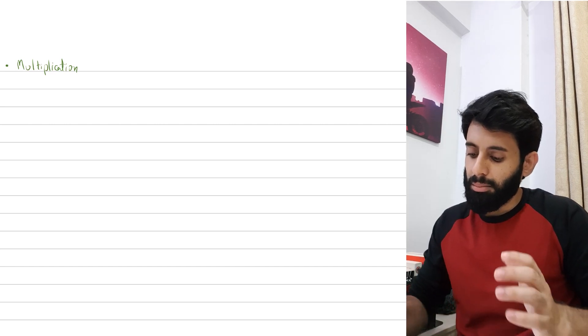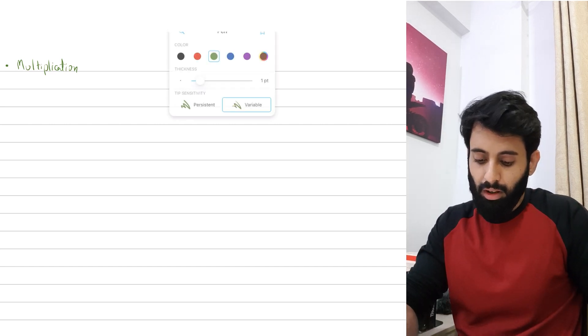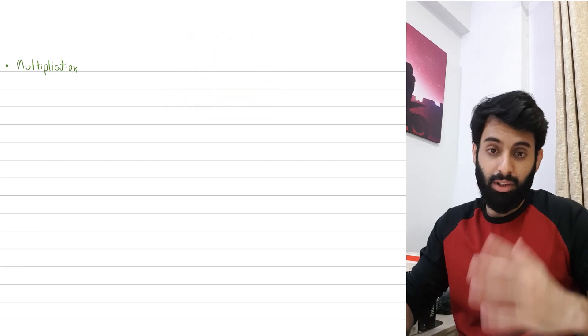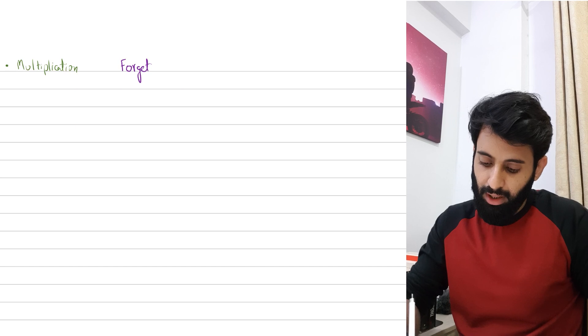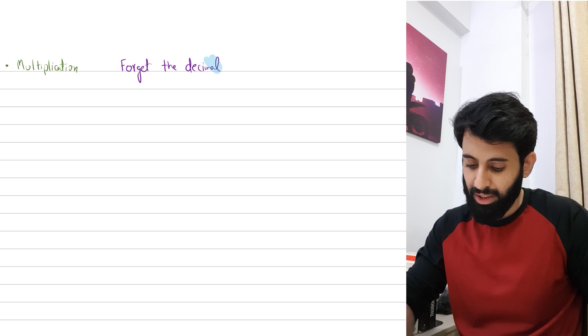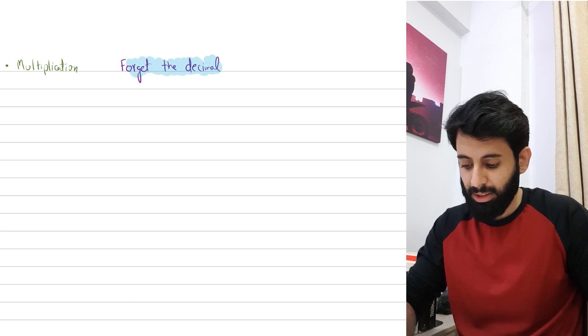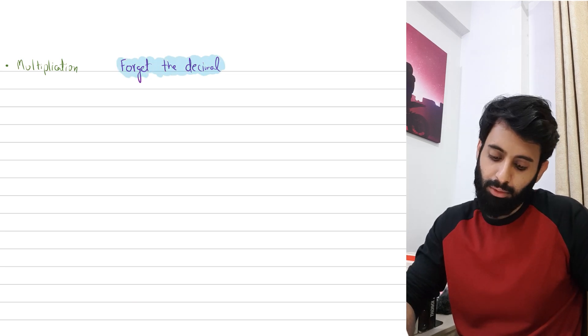But for multiplication of decimals you got to remember just three words: forget the decimal. Now I know it sounds weird that how come we're talking about how to multiply decimals and here you're saying that you forget the decimal. Well, it'll make sense if you watch this video further.